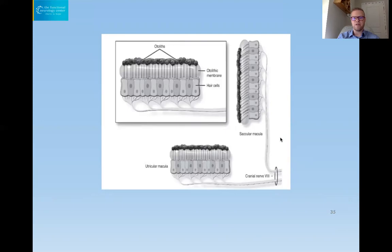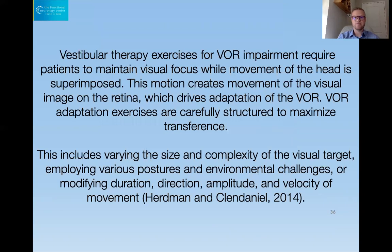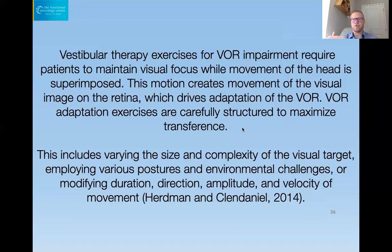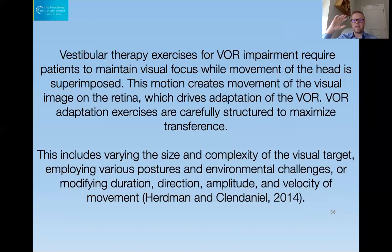The utricle and otolithic organs have hair cells and calcium carbonate crystals on membranes that signal to the brain where your head is in space. When doing vestibulo-ocular rehabilitation, postural challenges, environmental challenges, duration, direction, amplitude, and velocity all matter. If your VOR is down, your visual system may be enhanced, and if your VOR is decreased, the gain of your cervical proprioceptive system might increase — leading to excessive neck feedback that doesn't match what the visual system is reporting, producing dizziness with visual information.